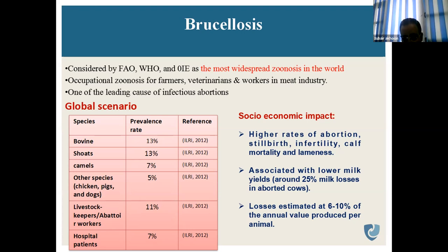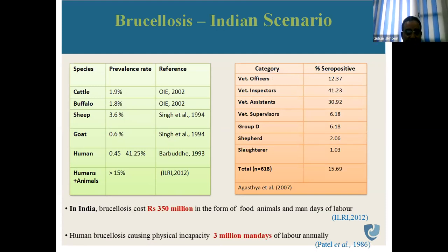Losses are 25% in terms of milk losses and higher rates of abortions. In India, brucellosis prevalence is 1.9% in cattle, 1.8% in buffalo, 3.6% in sheep, 0.6% in goats, and 0.5 to 41.25% in humans. Veterinary officers show seropositivity of 12.37%, and veterinary inspectors 41.23%.